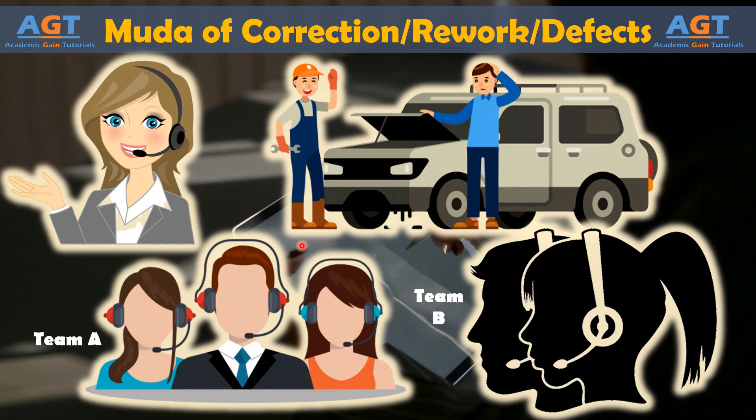Correction, or rework, can occur in any type of process. Manufacturing processes cull out defective parts and products — sometimes materials are reworked for a better outcome and sometimes they are scrapped, also a form of waste. Call centers and digital work queues are famous for rework, as it's easy to send work back and forth in a digital format. In some cases, rework occurs not because of correction, but simply because departmental or worker responsibilities overlap.